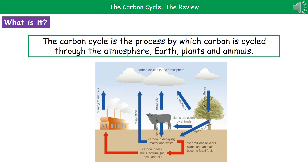I've given you a little picture there that summarises the whole process. If we start off at the very top with carbon dioxide in the atmosphere, there's only one arrow pointing away from that, which is photosynthesis. So the only way in which carbon dioxide is removed from the atmosphere is through photosynthesis in our plants.